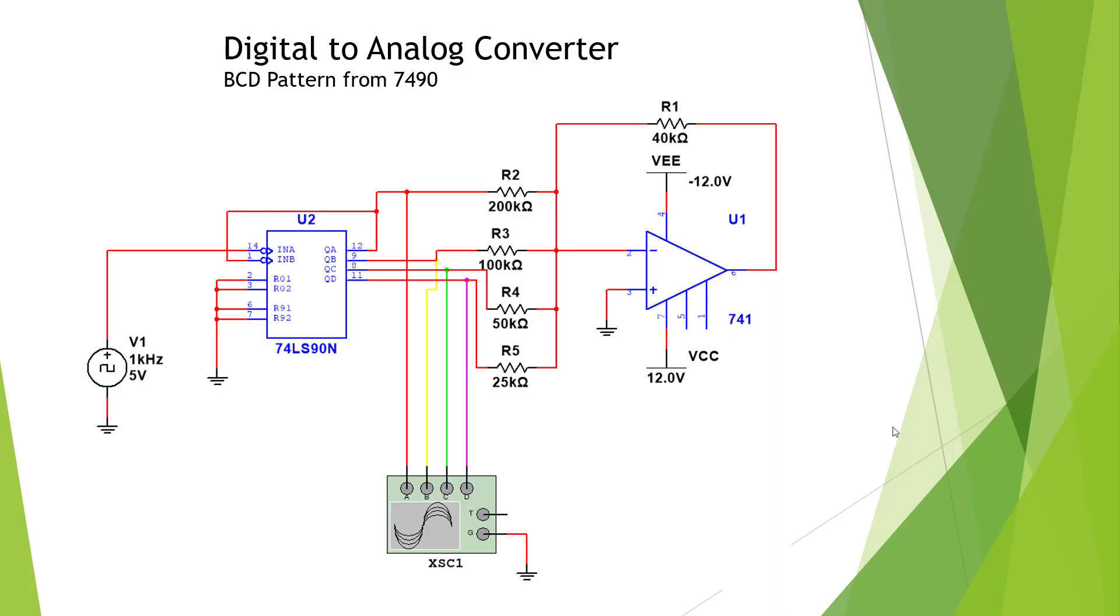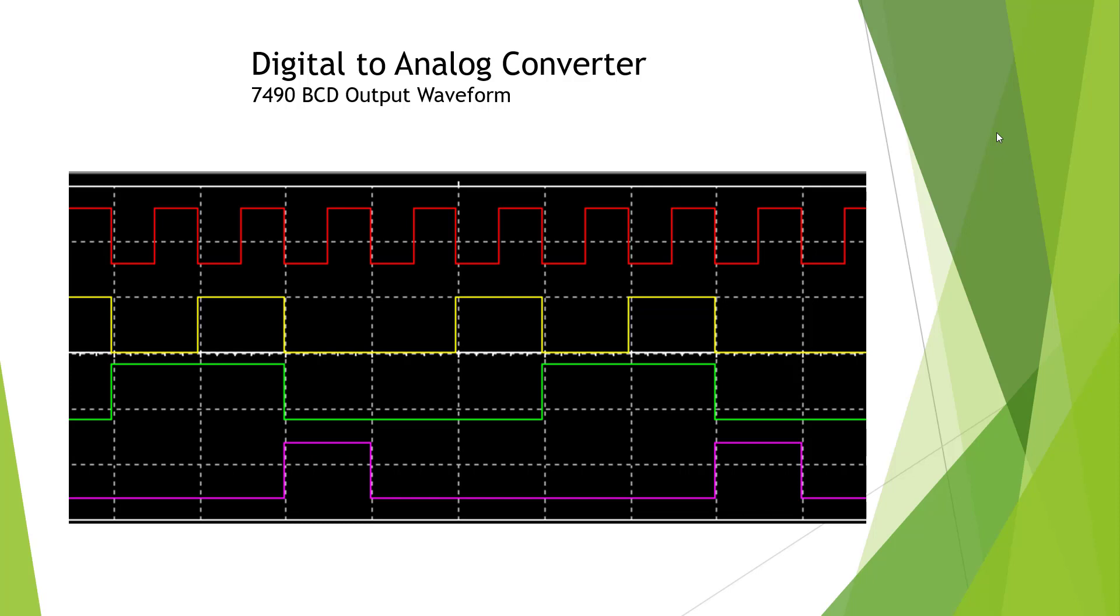Here we're looking at our same DAC. This time what I'm doing is I'm taking the oscilloscope and I'm looking at the BCD pattern. This is going to help us to troubleshoot this device when we do our troubleshooting final. Here's the BCD output from our DAC and we're going to, here's our first Q all the way to the bottom.